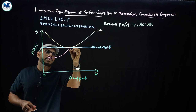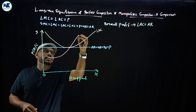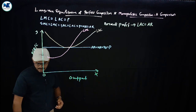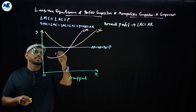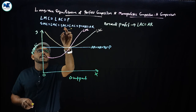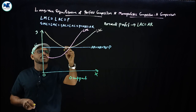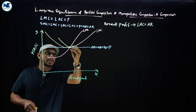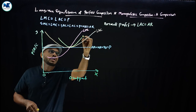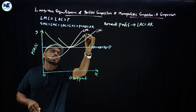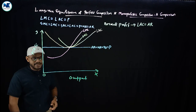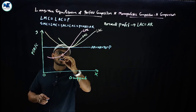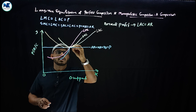The long-run marginal cost passes through the minimum point of the long-run average cost. Also, the short-run average cost equals the long-run average cost at equilibrium. This is the short-run average cost. We also need to draw the short-run marginal cost, which is also U-shaped.